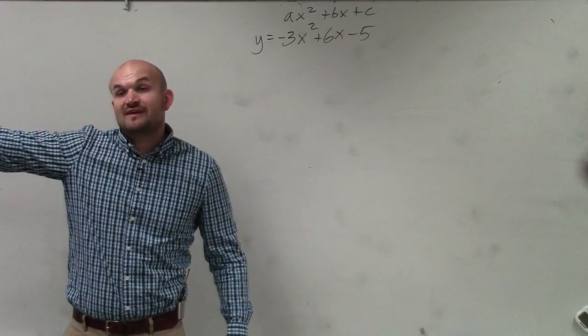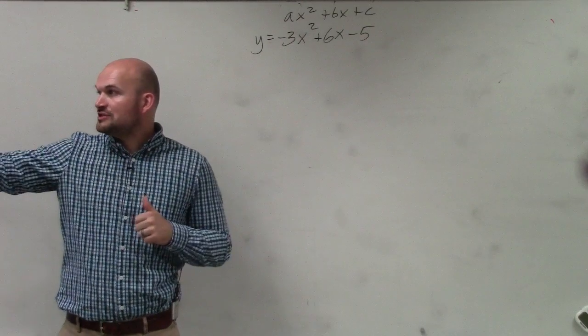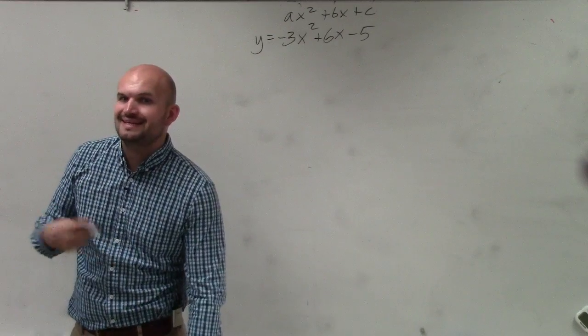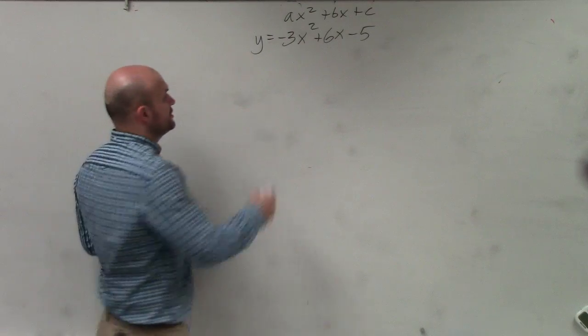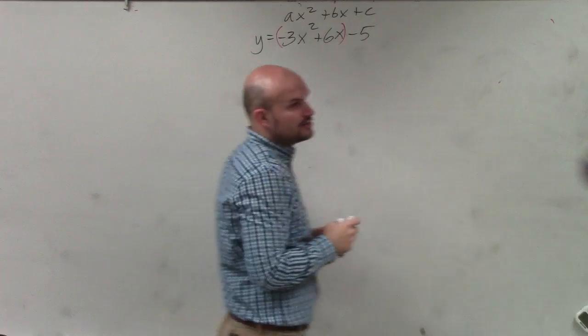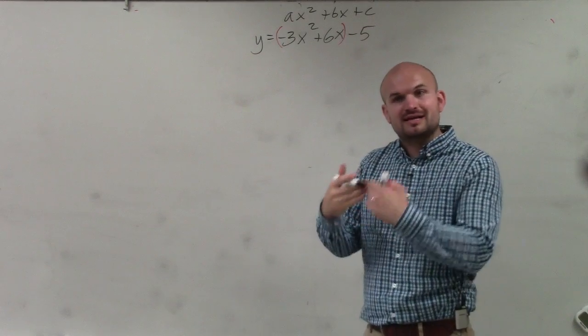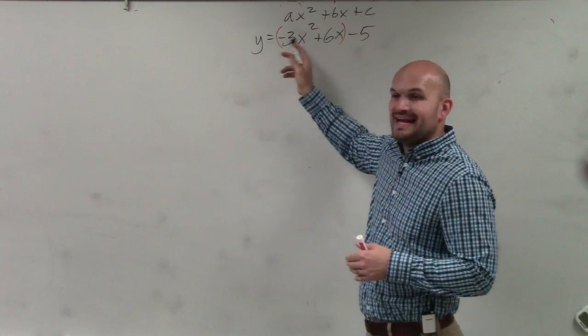So for number 5 and 6, you're going to have to do the process just like I did. For questions 1 through 4, you can skip the first step, which is getting your a to be 1. So to do that, what we do is we group our quadratic and linear terms and we factor out a negative 3 so that a is equal to 1.